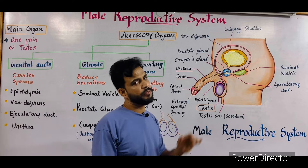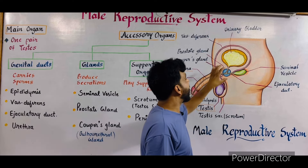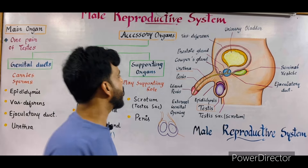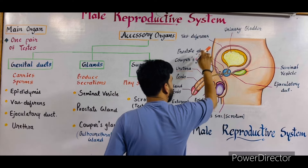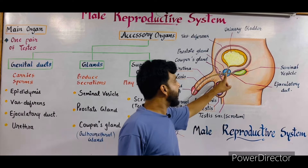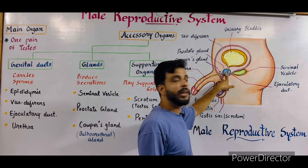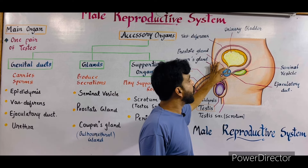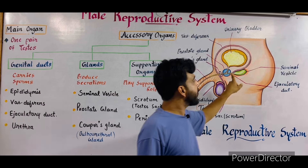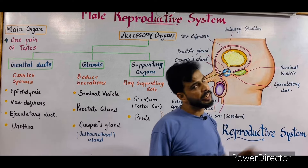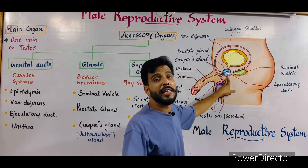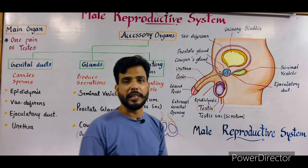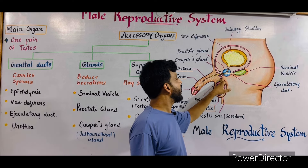There are two important glands in the male reproductive system. Number one is the prostate gland, shown here in sky blue color, attached at the junction of the urethra with the ejaculatory duct. The prostate gland plays a very important role in the formation of semen. As mentioned, 75 percent of semen is produced by the seminal vesicle, while the remaining 25 percent is produced by the prostate gland.